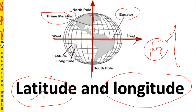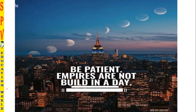Here is a challenge: find the place where the prime meridian and the equator — both the latitude and longitude — meet. Mention it in the comment section so that many others will know. I'm not going to give away the answer, so let's move on.